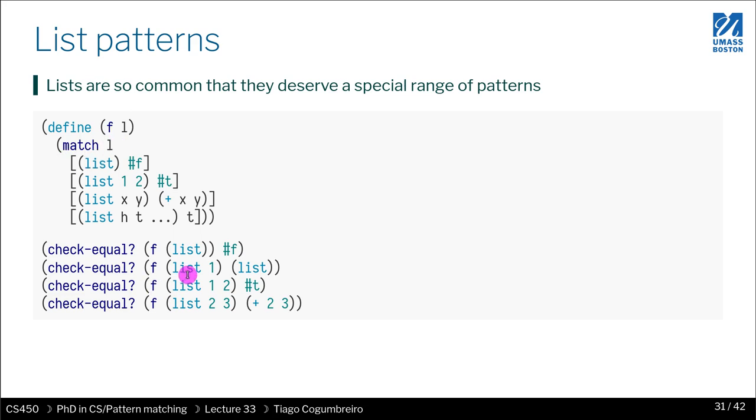So if you pass a list and you pass empty, you will get false. If you pass a list with one element, you will get this thing where the head is one and the rest of the list is T, which is empty. So therefore you would get the empty list. In the case where you pass two elements, if it's exactly one and two, then you would get this case. So you get true. But if it's something else, it wouldn't match the first one, it would match the second one. So therefore you would do the addition.